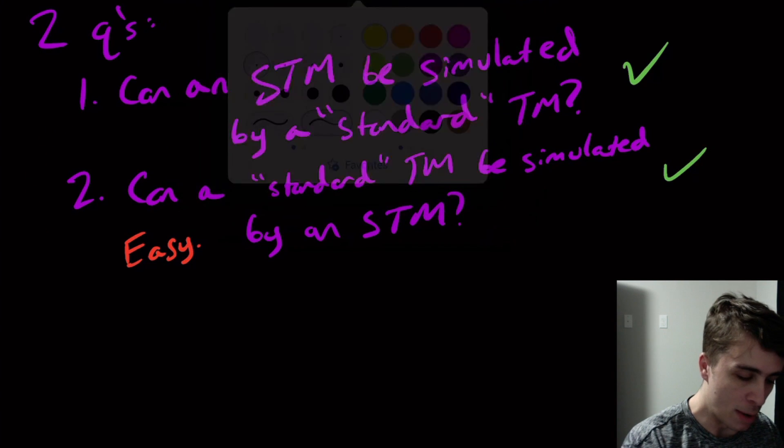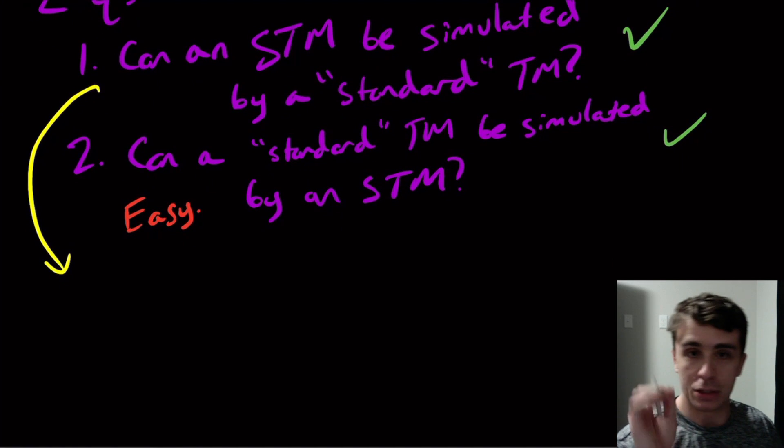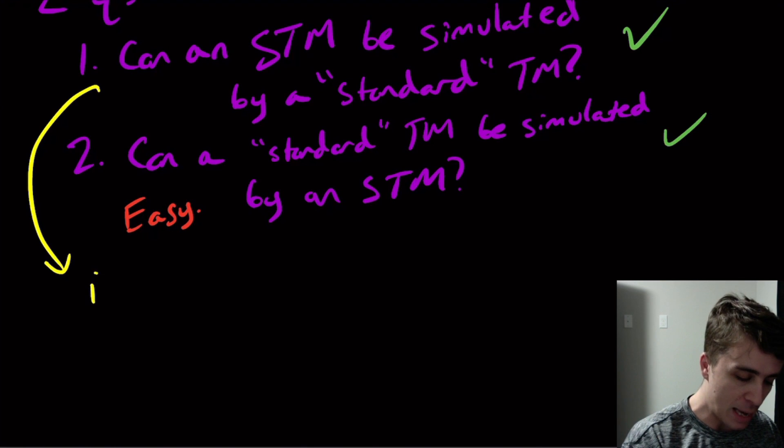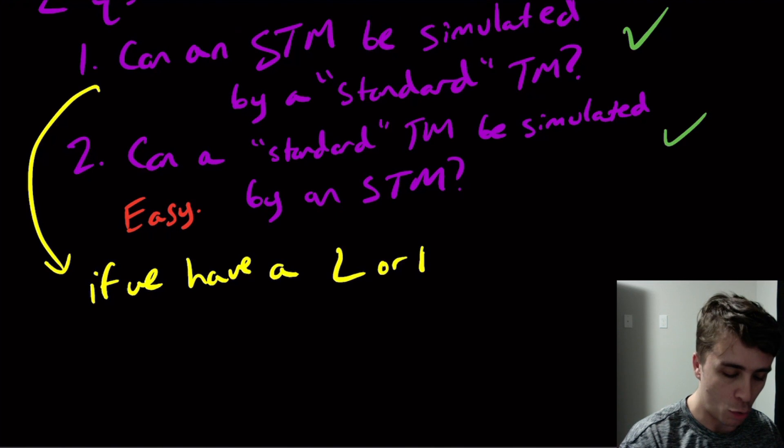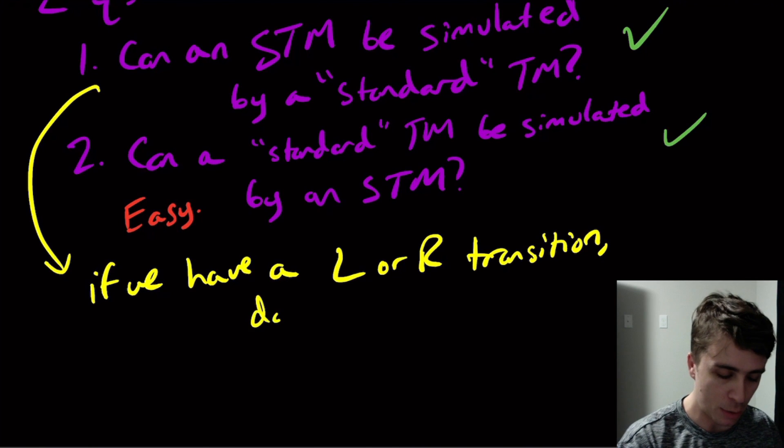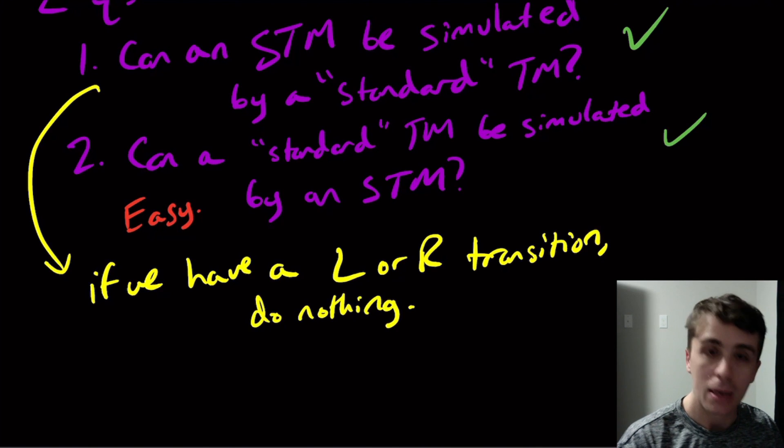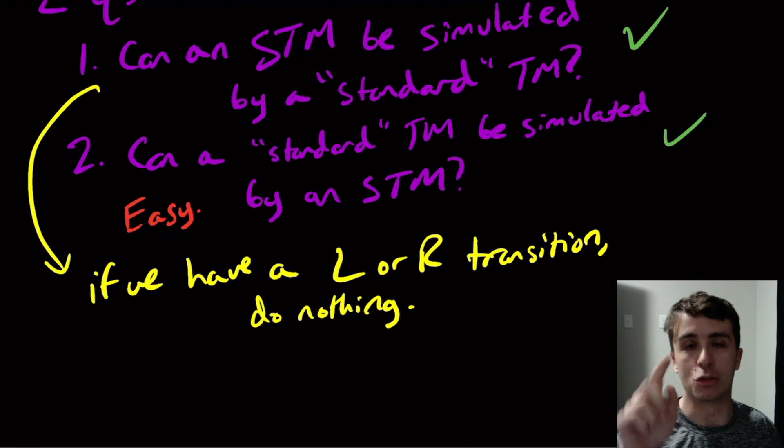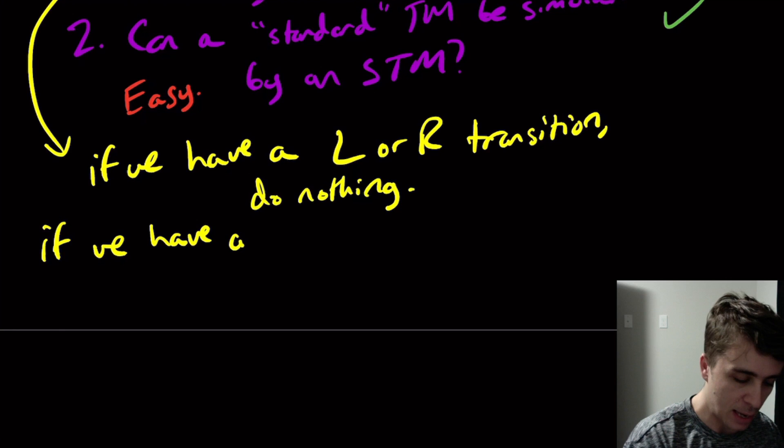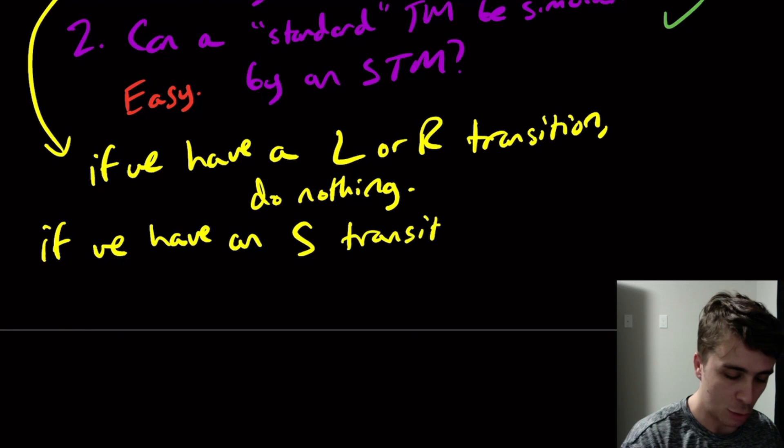What about question one? So what do we do here? So the stay put Turing machine is going to have lefts, rights, and stay puts in some number of them. So if we have a left or right transition, we don't actually have to do anything because the normal machine can already do those. So here we can just do nothing. And of course, the really interesting thing is when it has the stay put on the transition. So if we have an S transition, what do we actually do here?